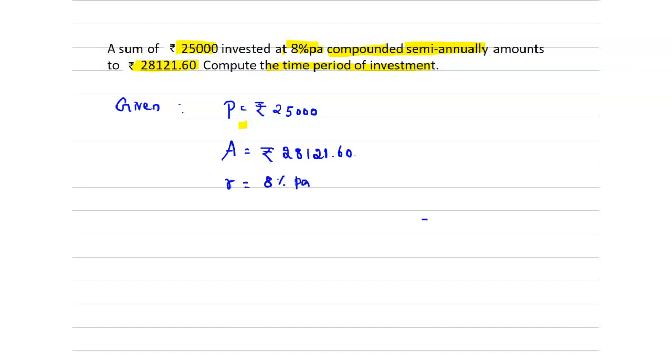The rate of interest R is given as 8% per annum, but we have to calculate semi-annually, so it is 8% divided by 2, which is 4% per half year.